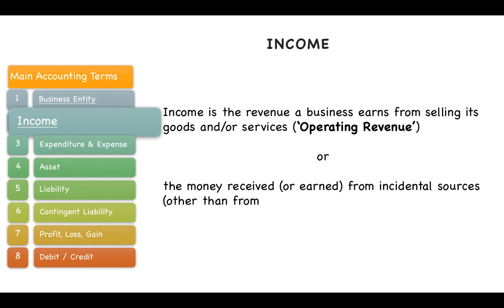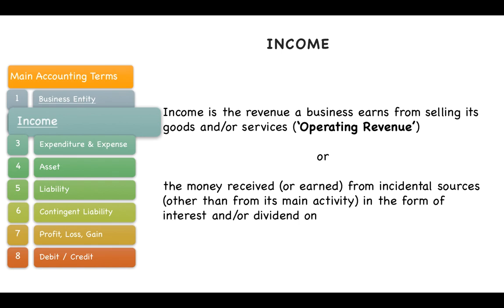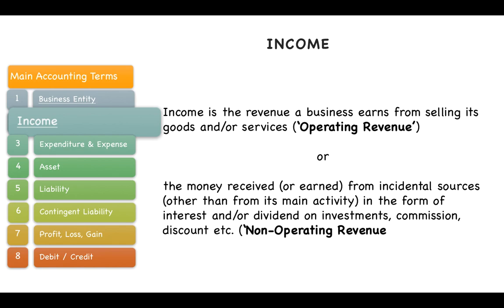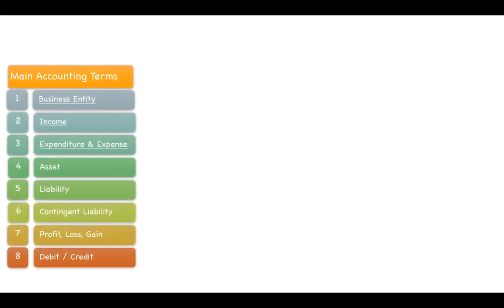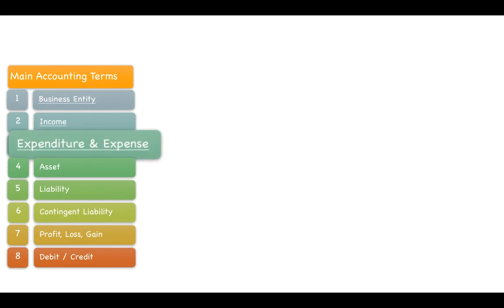Revenue from incidental sources — other than the main goods or services activity — such as interest and/or dividend on investments, commission, or discount, are called non-operating revenue. The next term is very important: expenditure and expense. We usually use them interchangeably, but these two terms are different.